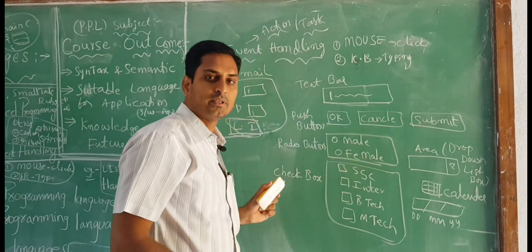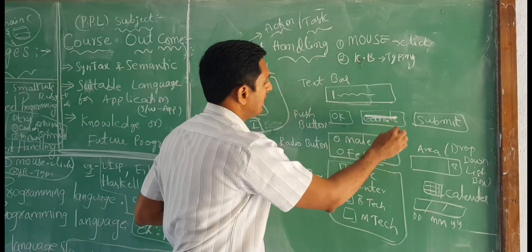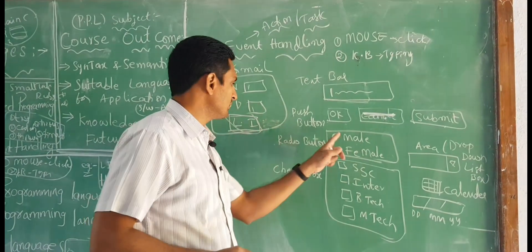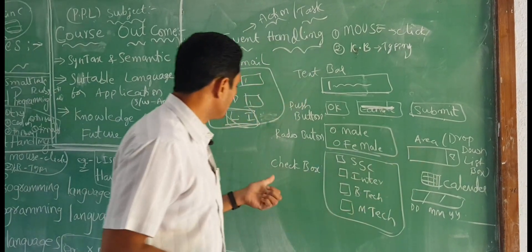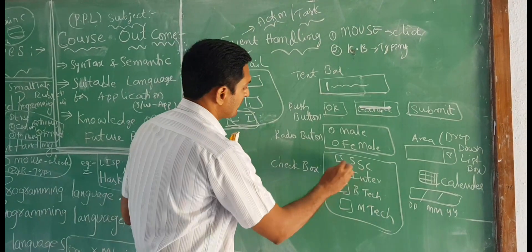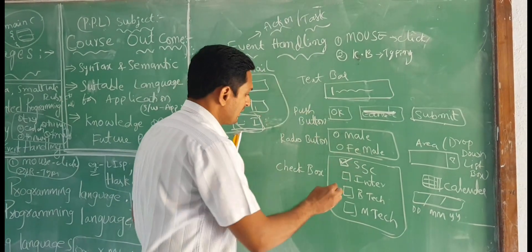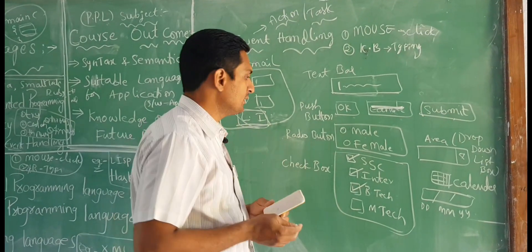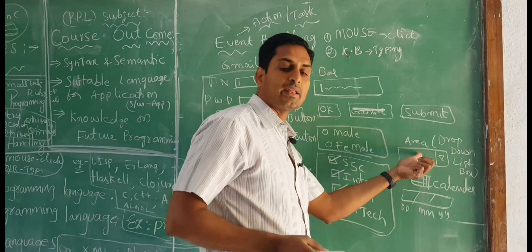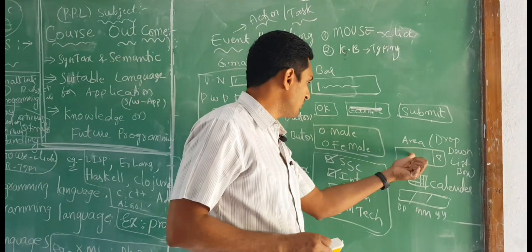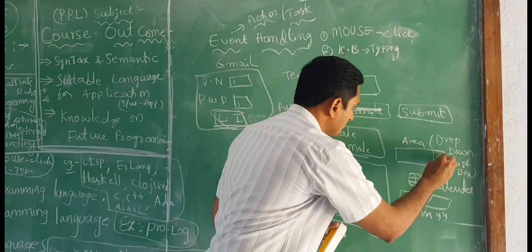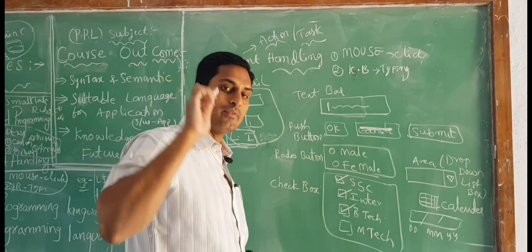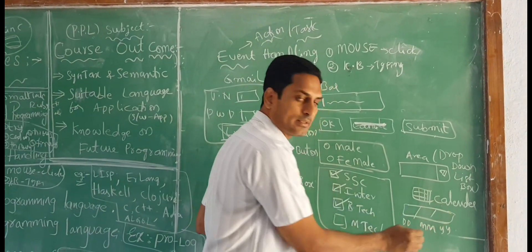And we have radio buttons, for example, gender male or female, we will select either one. These are called radio buttons. Or we have checkboxes. In checkboxes we have, for example, SSC, your qualification is 10th or inter or if you have done BTEC, these are called checkboxes in an application. And if you belong to some area, which country you belong to, which state you belong to, you will have a dropdown list bar. These are called event handling that can be handled and designed with a programming language background, some calendar in an application.